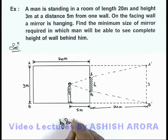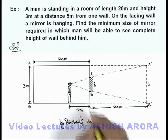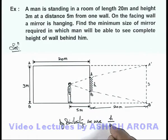By similarity we use h by 5 is equal to 3 by 25. This implies the value of h we are getting is 3 by 5 meters, that is 0.6 meters. This will be the answer to this problem.